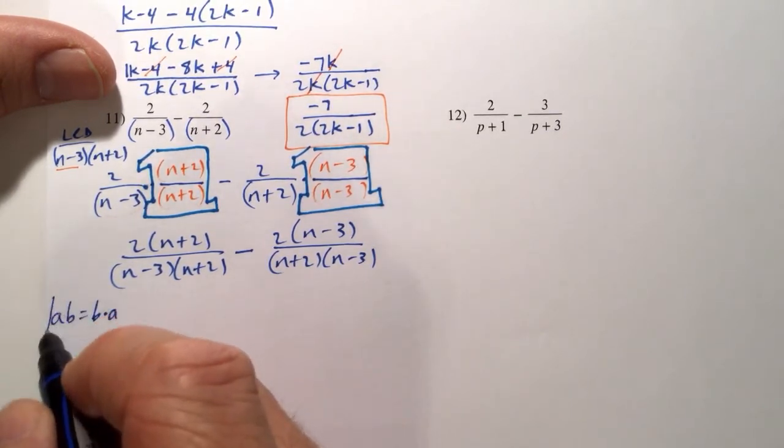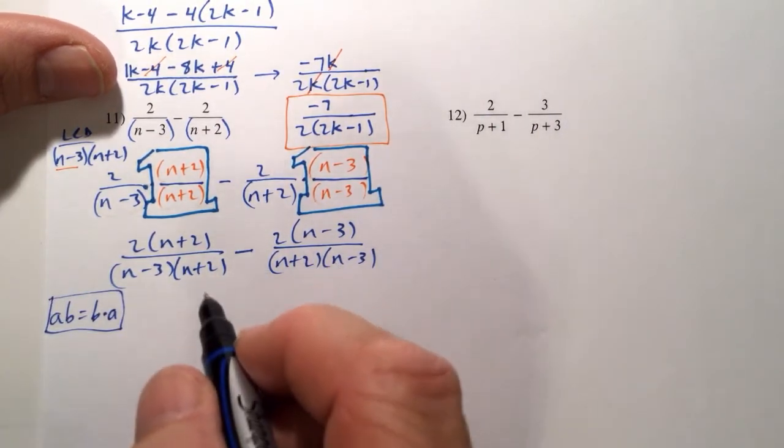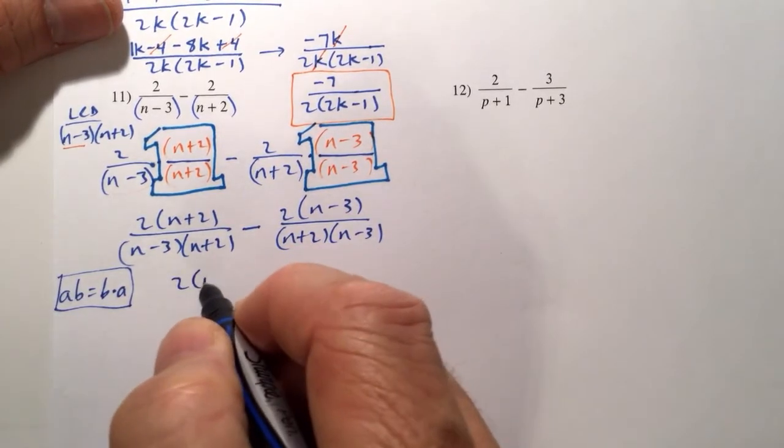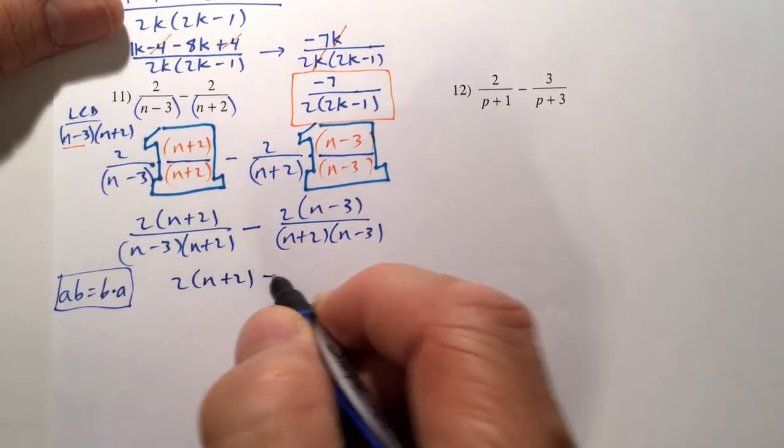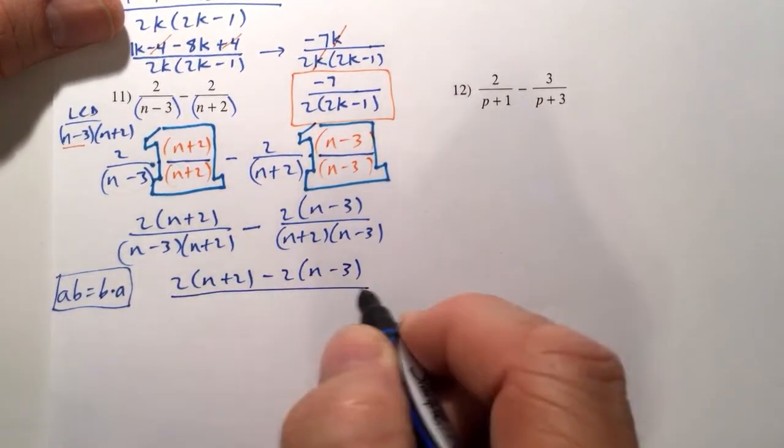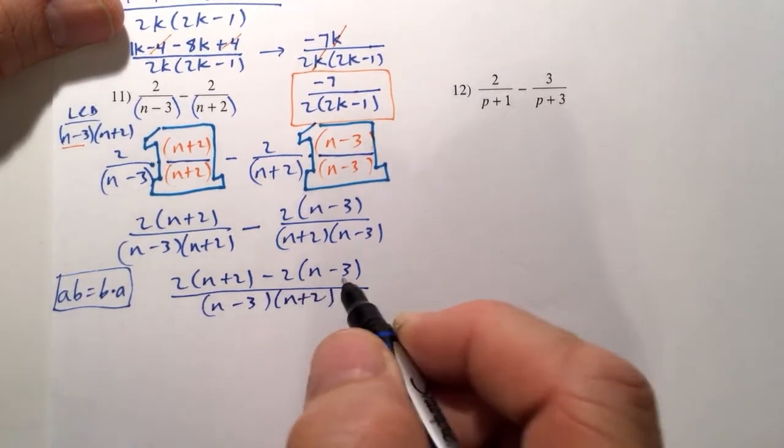That's a property of real numbers as well. So, therefore, we do have the same denominator, which means we combine the numerators. And combining the numerators, we have 2 times n plus 2, minus 2 times n minus 3. And that's all over n minus 3 times n plus 2.